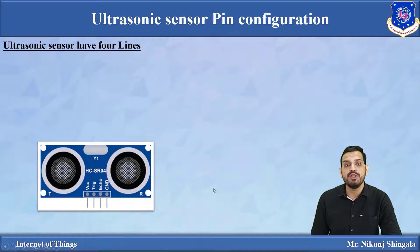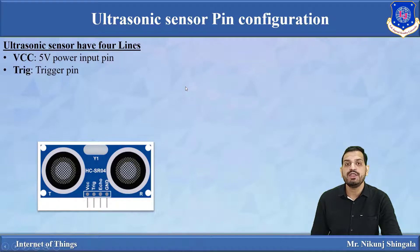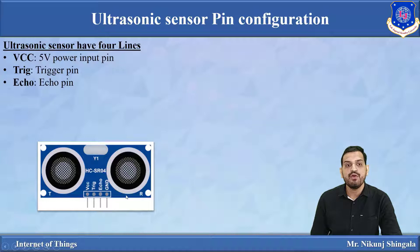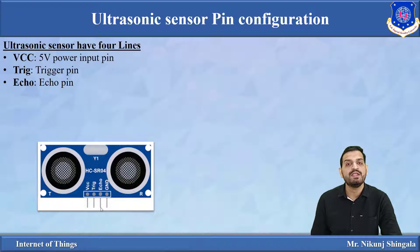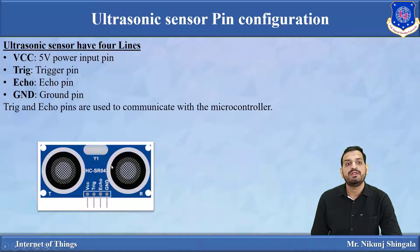The ultrasonic sensor module has a 4-pin configuration: VCC where we apply 5 volts, the trigger pin which triggers the acoustic burst for a certain duration in microseconds, the echo pin which measures the duration from transmitter to object and object to receiver — divided by 2 when converting to distance — and the ground pin. The trigger and echo pins are used to communicate with the microcontroller.